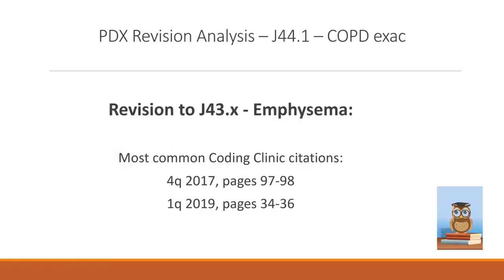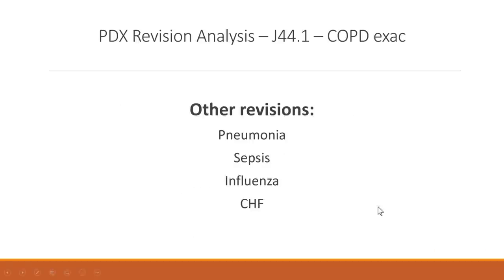Another revision to J44.1 was for emphysema. Before certain coding clinics came out, coders would see emphysema and COPD and just code COPD. Now when emphysema is documented, you must use the J43 code — a significant change. This would be a good area to focus reviews on: pull cases with J44 codes and make sure emphysema wasn't documented, as that changes coding drastically. Other revisions to COPD exacerbation included changes to pneumonia, sepsis, influenza, and CHF, when an underlying cause or something more significant qualified as the principal diagnosis.